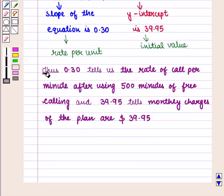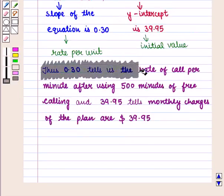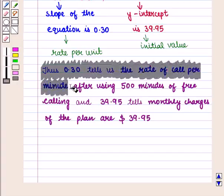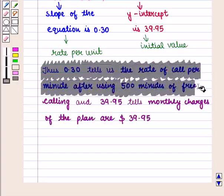Thus, 0.30 tells us the rate of call per minute after using 500 minutes of free calling.